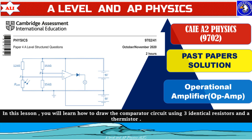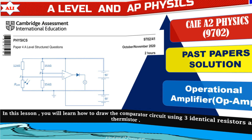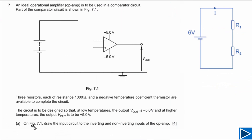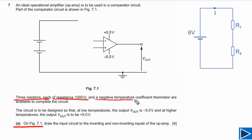A very important concept about operational amplifiers. For question 7 part A, we simply need to draw a circuit on figure 7.1. We need to use three identical resistors, each with a resistance of 1000 ohms, and one negative temperature coefficient thermistor — an NTC thermistor.